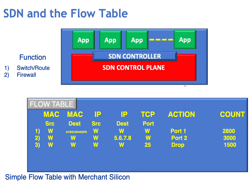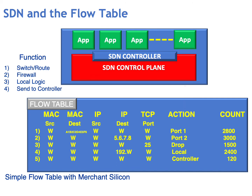We can also have applications which act as a firewall. For example, we can instruct the flow table: if you see TCP port 25, drop it. We can also use local logic — you may have a hybrid system where some local logic still resides in the remote switch-router. In this case, we could tell the silicon: if you see destination address 192.x.x.x — where W indicates a wildcard — then use the local logic to make the decision on how to forward this particular flow of traffic.